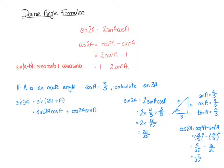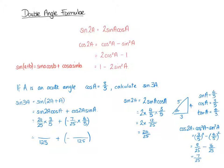So we can now go back to our main calculation. We know sine 2A is 24 over 25, so we have 24 over 25 times cos A which is 3 fifths, plus cos 2A which is minus 7 over 25 times sine A which is 4 fifths. Multiplying out: the denominators are 25 times 5 which is 125 for both fractions. On the top: 24 times 3 is 72, and 7 times 4 is 28. So we've got 72 take away 28, which gives us 44. So the answer is 44 over 125.